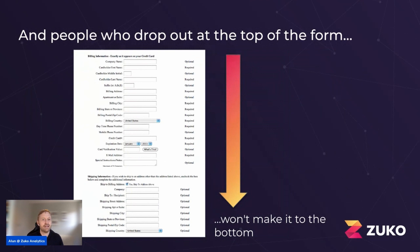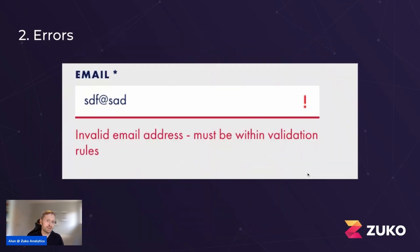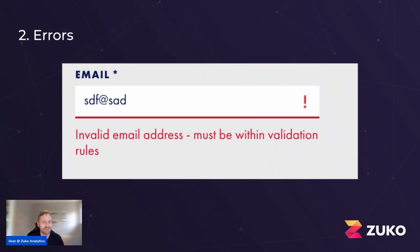The second metric is all about error messages — which errors are triggering and when. You need to make sure your analytics is set up to show you which error messages are showing. Error messages are an indication of friction; something's gone wrong. If you know which ones are triggering the most, you can see exactly where on your form people are struggling. The rule of thumb is: the more an error message occurs, the bigger a problem it is.